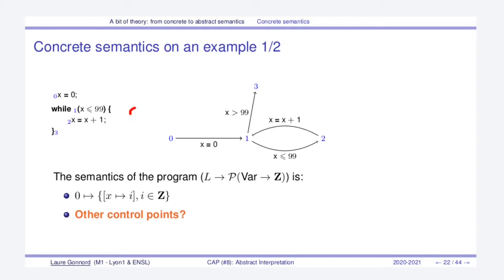Let's make an example. We have this program transformed into this control flow graph, which has an assignment to zero followed by a loop. The objective is to define what is the semantics of this program. The solution gives us a map where the set of values for each control point is shown — for instance, the set of valuations at control point three is the unique valuation where x maps to one hundred.